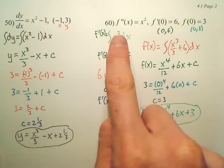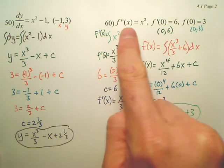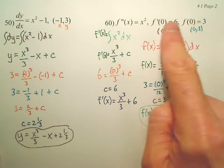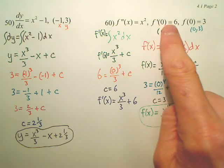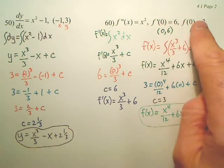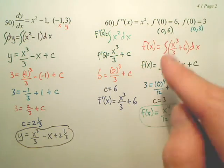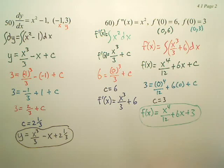If I start with this and I know these two values, I can work my way down to the original function. You have to have these two values. If you do not, you could not work your way backwards like this.